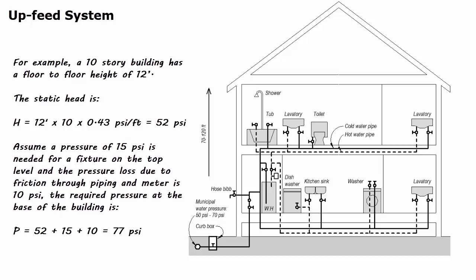Assuming a pressure of 15 psi is needed for a fixture on the top level and the pressure lost due to friction through piping and meter is 10 psi, the required pressure at the base of the building is 52 plus 15 plus 10, which equals 77 psi.